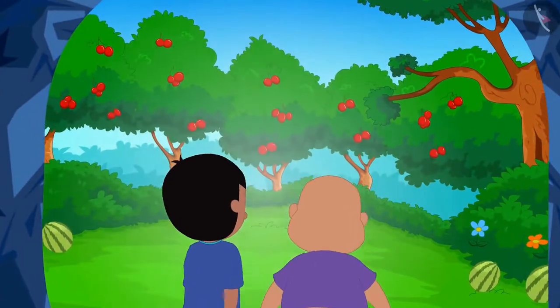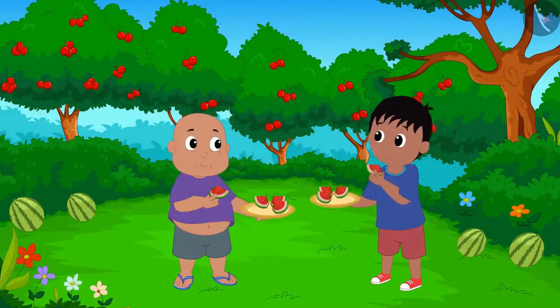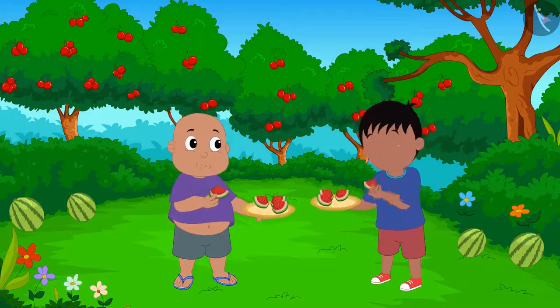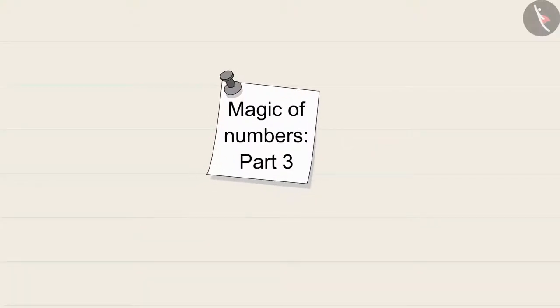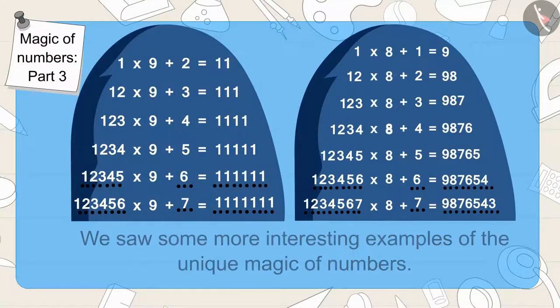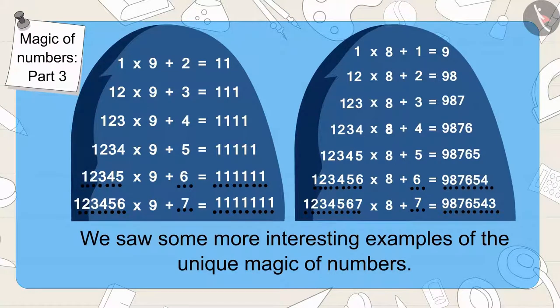After passing through the door, Raju and Bablu reached a unique world of fruits. Children, in this video, we saw some more interesting examples of unique magic of numbers.